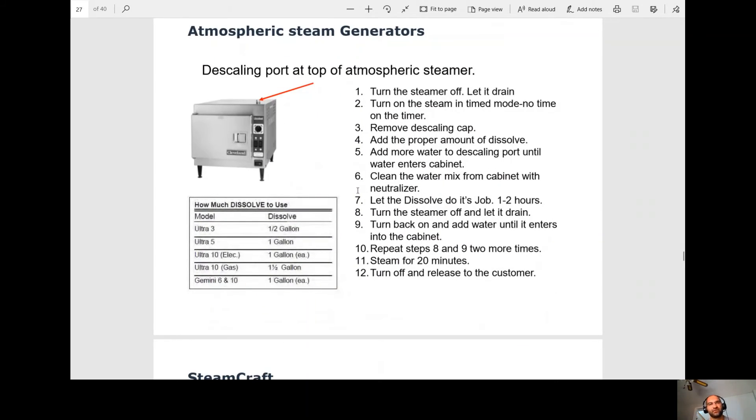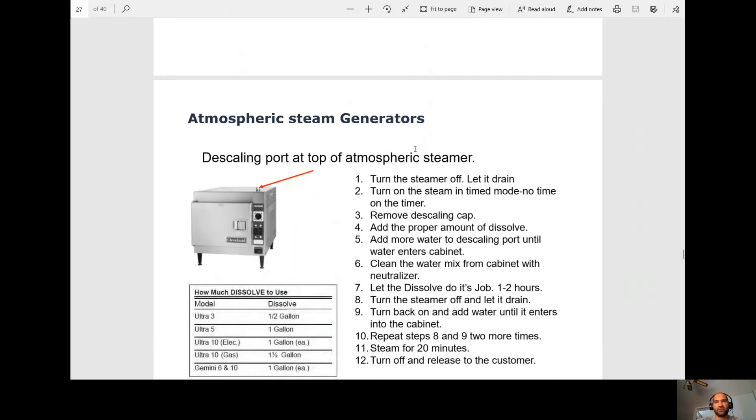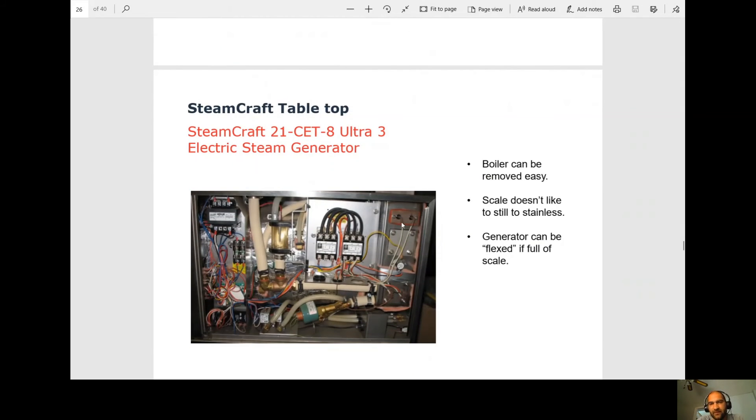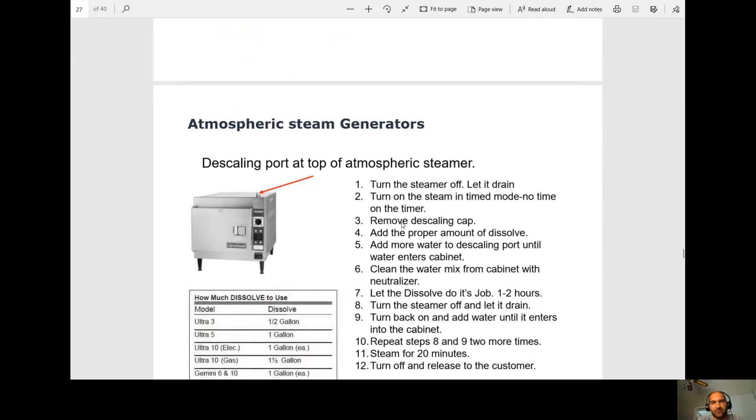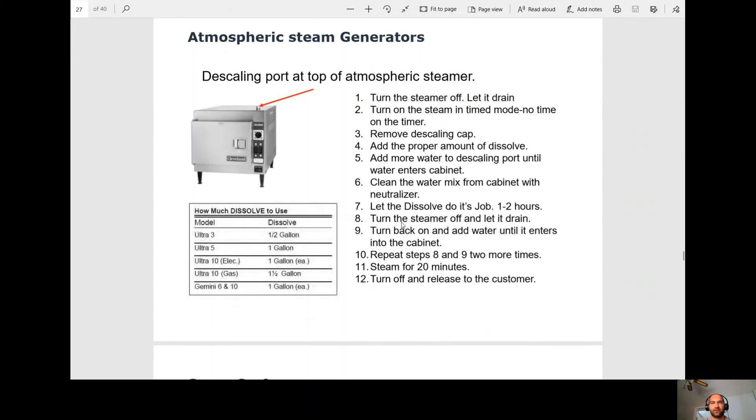So this is the procedure for descaling. Turn the steamer off, let it drain, turn on the steam and time mode and put no time on the timer. So why we do that? We don't want the unit to heat. So there will still be some heat. If we look here, there's a preheat element. We're going to have minimal heat from that. So it's important that we do this when we're not heating. Remove the descale cap. Add the proper amount of dissolve. Add more water to the descale port until water enters the cabinet. So you'll open the door. You'll see it overflowing from the boiler into the cabinet. Now we know we're full. You want to clean that water mix that's spilt into the cabinet with a neutralizer.